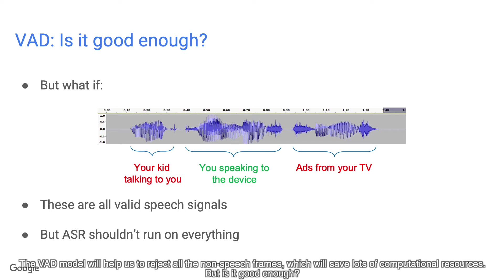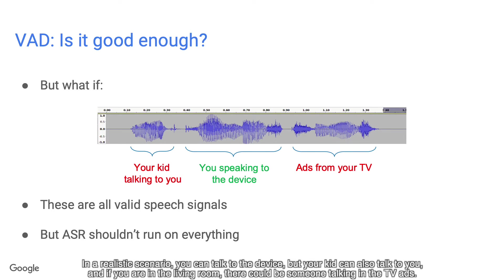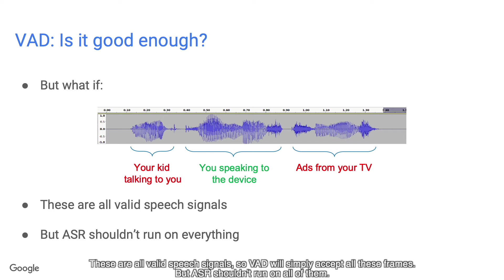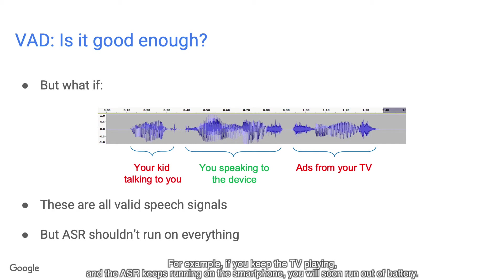But is it good enough? In a realistic scenario, you can talk to the device, but your kid can also talk to you, and if you are in the living room there could be someone talking in TV ads. These are all valid speech signals, so VAD will simply accept all these frames. But ASR shouldn't run on all of them — for example, if the TV keeps playing and ASR keeps running on the smartphone, you will soon run out of battery.